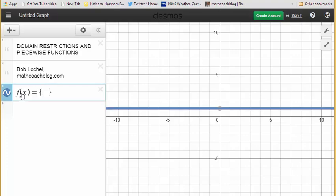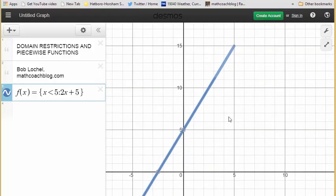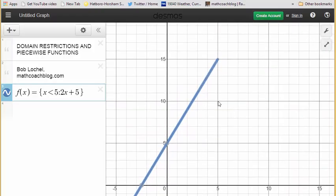First we're going to start with x is less than 5. Here you need a colon: x is less than 5 colon 2x plus 5. This one is actually going off the screen a little bit, so I have to scroll up. Notice it's been chopped off at 5, and it's graphing the line only up to 5.